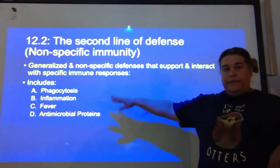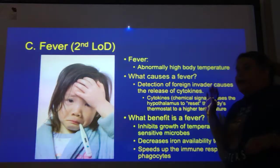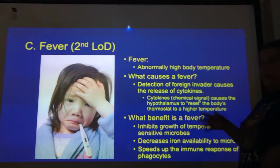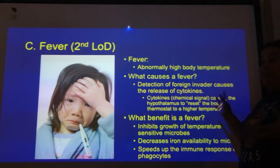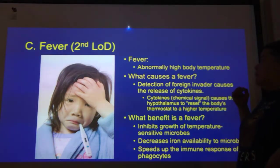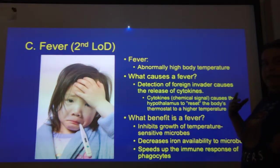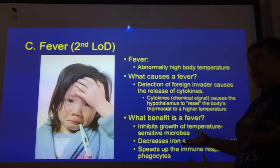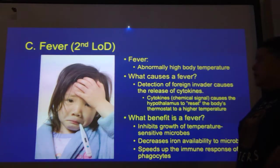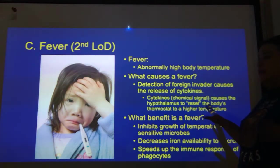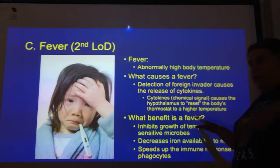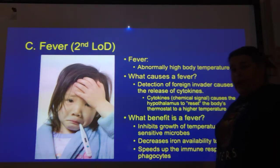Phagocytosis, inflammation — now let's talk fever. A fever is an abnormally high body temperature. If our body detects a foreign invader, it can release cytokines — specifically pyrogens — that cause the hypothalamus, which is the body's thermostat located in the brain, to raise the body temperature. Normally the hypothalamus keeps us at 98.6°F, but when pyrogens are released, it raises the thermostat.